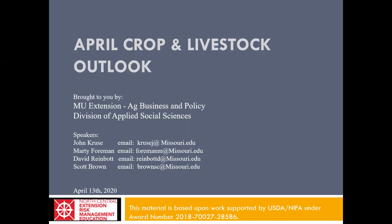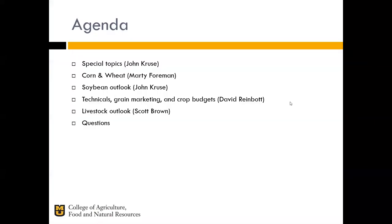Welcome to the April Crop and Livestock Outlook, brought to you by MU Extension and the Food and Ag Policy Research Institute at the University of Missouri. Today we're going to be talking about a couple of different topics. First, we've got some special topics with COVID-19 at the top of the list. Then we're going to touch on corn, wheat, and soybeans. David's going to take us through some technical trading and what to do if you still have some crop in the bin that isn't priced. Then Scott's going to take us through the Livestock Outlook.